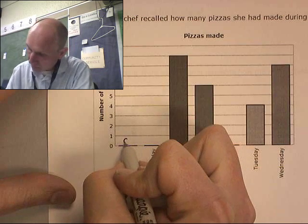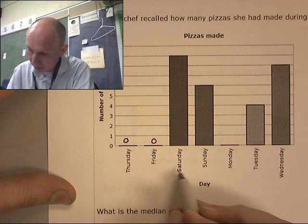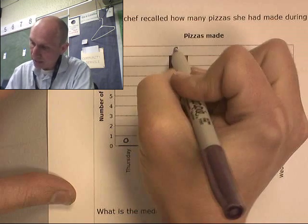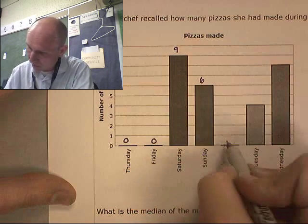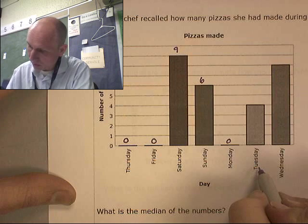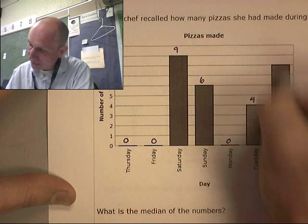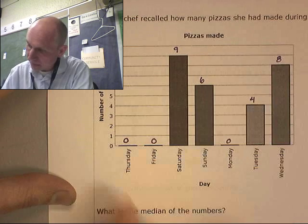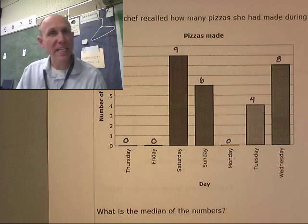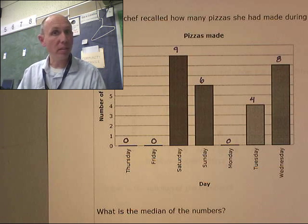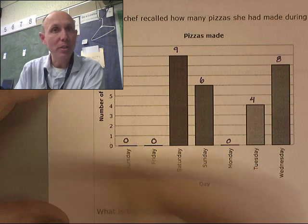Thursday: zero. Friday: zero. Saturday: nine. Sunday: six. Monday: zero. Tuesday: four. Wednesday: eight. So we have seven different numbers and we want to find the median — the middle number. To do this, I'm going to put the numbers in order.